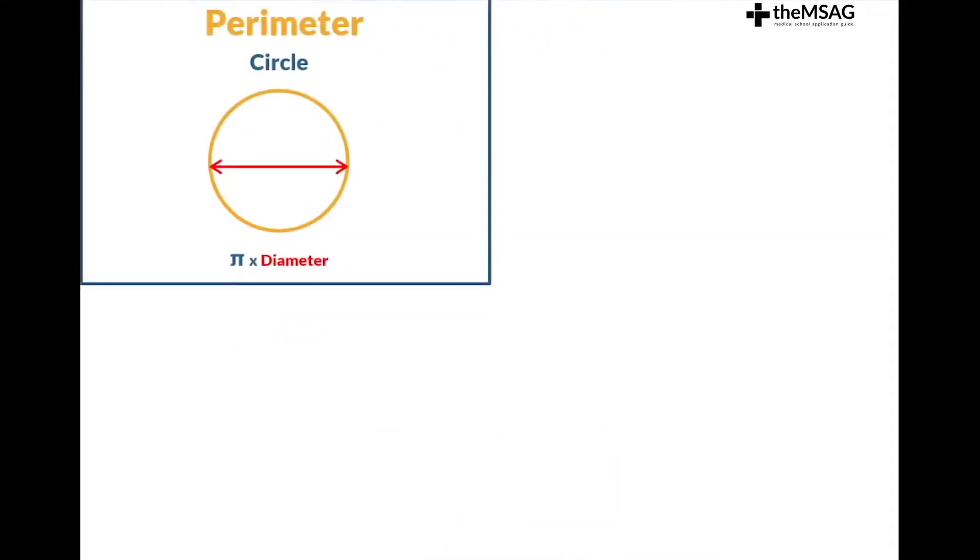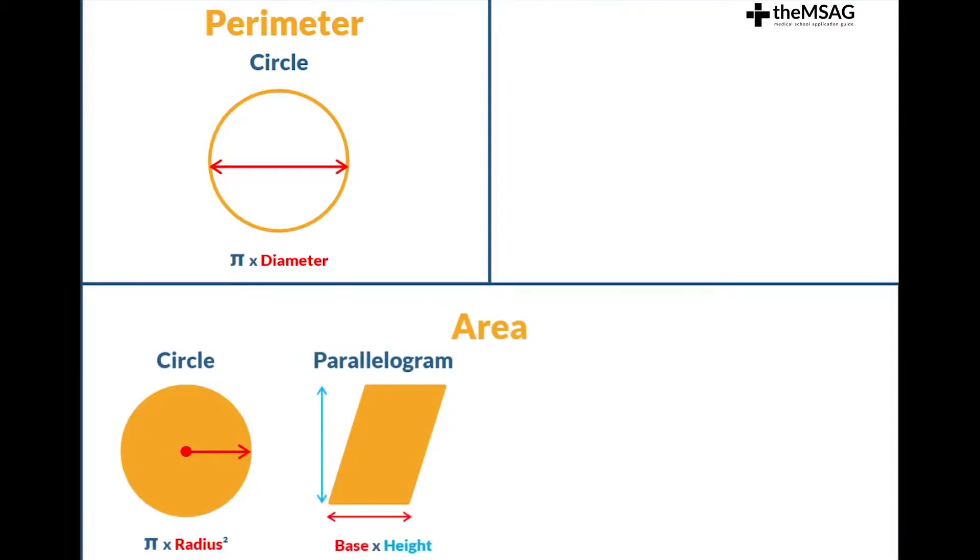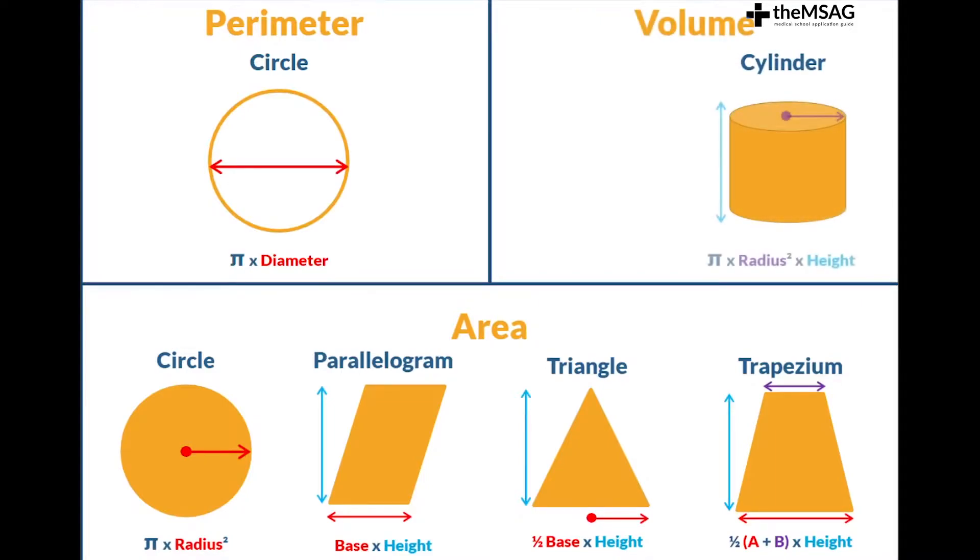Here are the most forgotten formulas. The perimeter of a circle is pi times diameter. The area of a circle is pi times radius squared. The area of a parallelogram is base times height. The area of a triangle is half base times height. The area of a trapezium is half a plus b times height where a and b are the two parallel sides. The volume of a cylinder is pi times radius squared times height. The volume of sphere is 4 over 3 times pi times radius cubed. Luckily the UCAT isn't too punishing with these formulas and will often remind you of them but we recommend you memorize them anyway to gain a speed advantage.